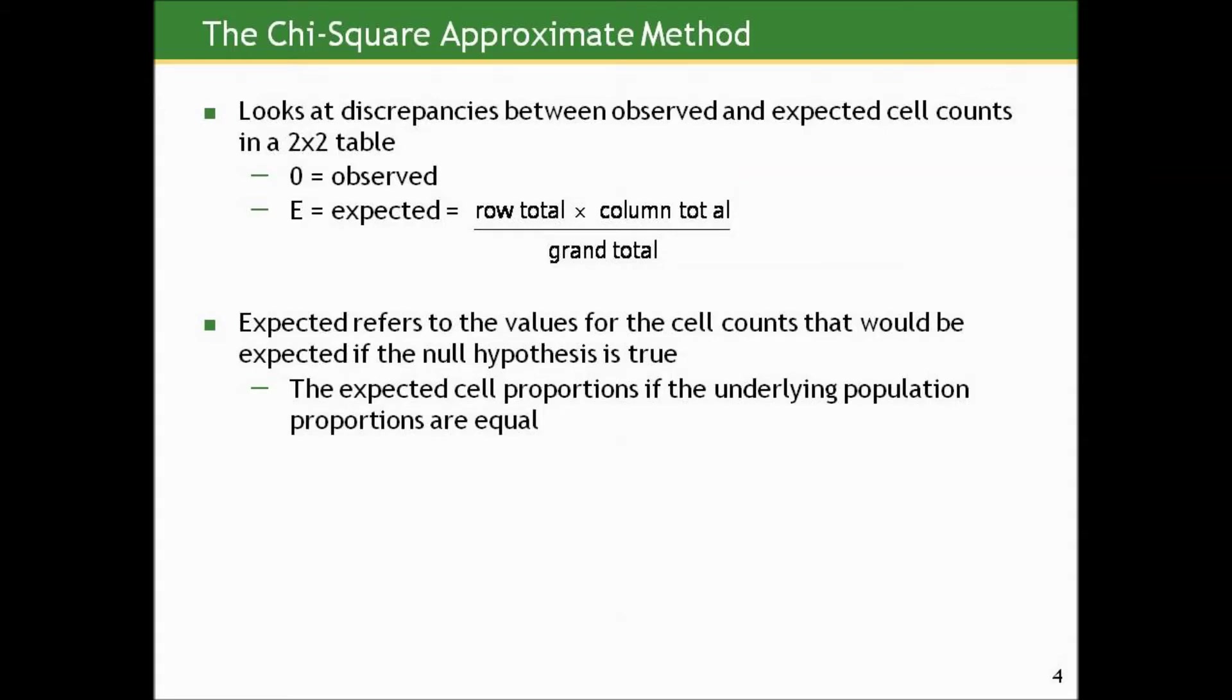And the way we compute an expected cell count is we take the row total for the cell times the column total over the grand total. Think about this for a minute. Does that make sense as a way to compute the number of subjects in the cell we would expect if the null were true? We'll talk about this more in live talk, but see if you can figure out the logic behind this. And again, expected refers to those values for the cell counts that would be expected were the null hypothesis true, if the underlying proportions at the population level were equal.